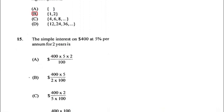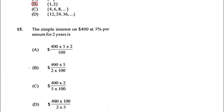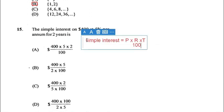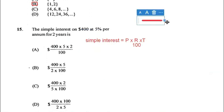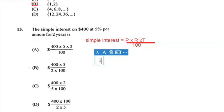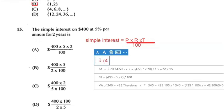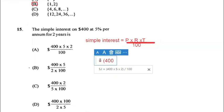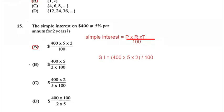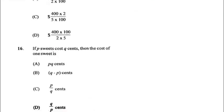Number fifteen: the simple interest on $400 at 5 percent per annum for 2 years. Remember simple interest equals principal times rate times time, all divided by 100. So it becomes 400 multiplied by 5 multiplied by 2, divided by 100. The answer for fifteen is A. Always remember that time is written in years.